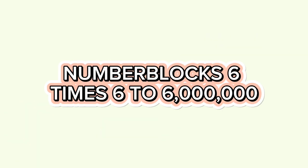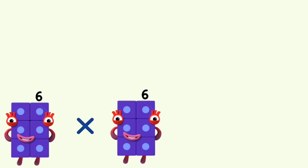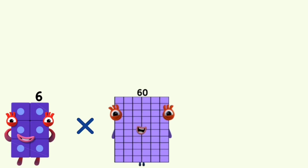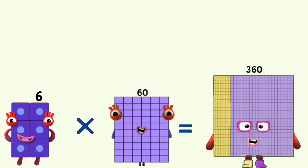Number blocks: 6 times 6 to 6,000,000. 6 times 6,000,000. 6 times 60,000 equals 360,000,000.